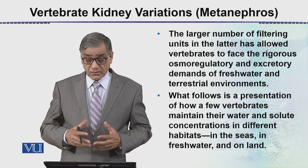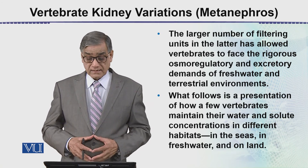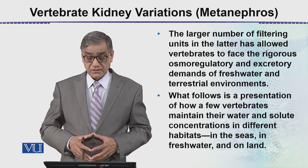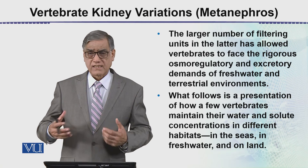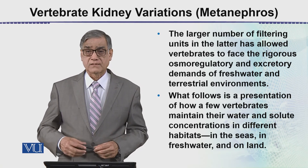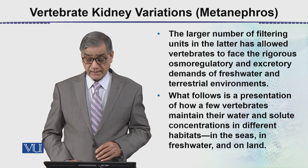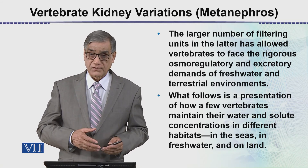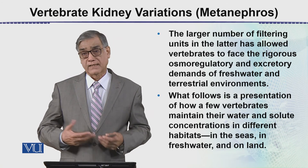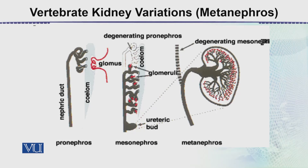What follows is a presentation of how a few vertebrates maintain their blood and solute concentration in different habitats — in the seas, freshwater, and terrestrial environments. In the next chapters or modules, we will concentrate on how water balance is maintained by freshwater fishes and marine water fishes, as shown in this diagram.